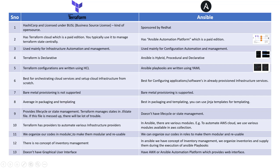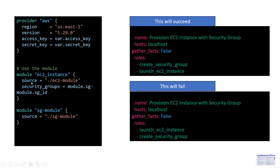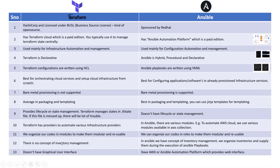Next, how code is organized: in Terraform we organize code using modules — for example, an EC2 instance module and a security group module, each being a folder. In Ansible, we organize code using roles, which is why you see roles being called in playbooks. So in Terraform we use modules, and in Ansible we use roles.